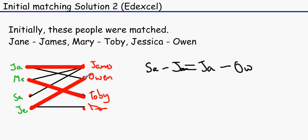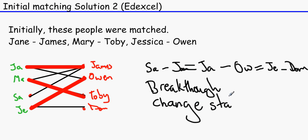And then Owen is matched up with Jessica. So we have a double line and we have JE. And Jessica can be matched up with Dom. And then what happens now, since we've reached the end of it, you say breakthrough. Breakthrough. Change status. Change status.